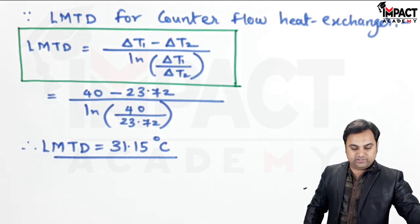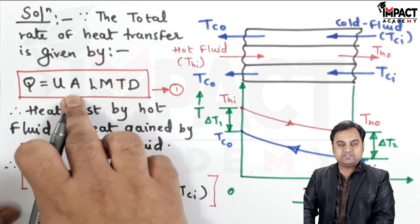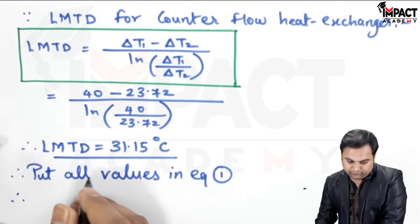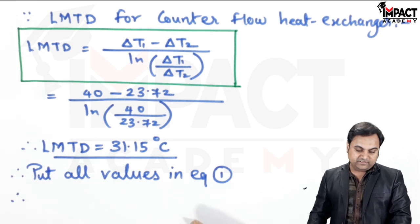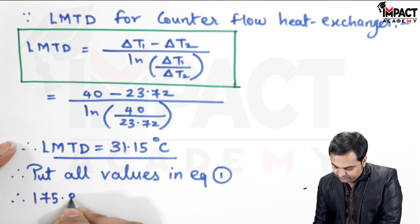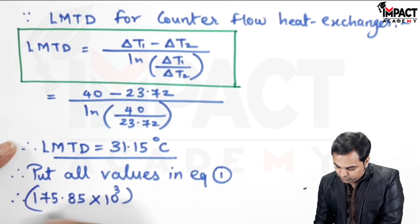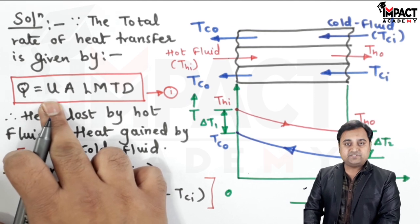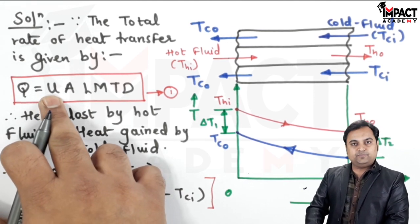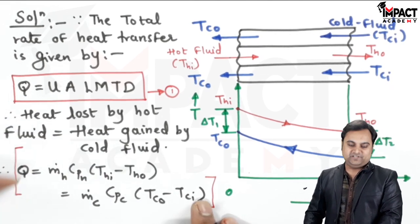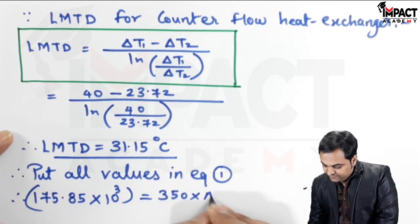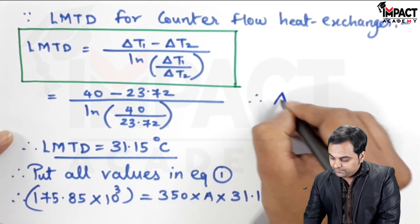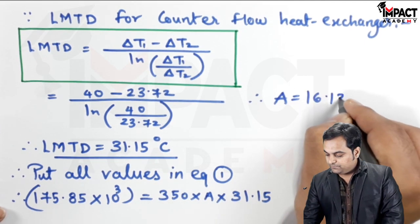The LMTD formula is: LMTD = (Delta T1 − Delta T2) / ln(Delta T1 / Delta T2) = (40 − 23.72) / ln(40 / 23.72) = 31.15°C. Substituting into Q = U·A·LMTD: 175.85 × 10³ = 350 × A × 31.15. Since U is in watts, Q must also be in watts. Solving gives surface area A = 16.13 m².